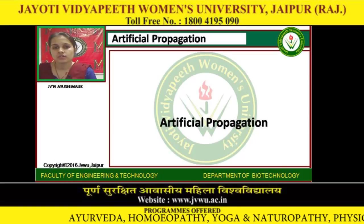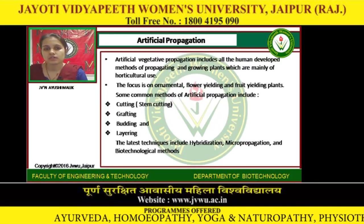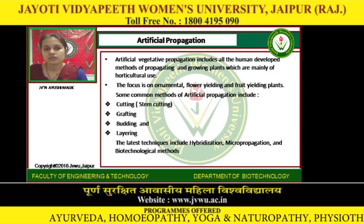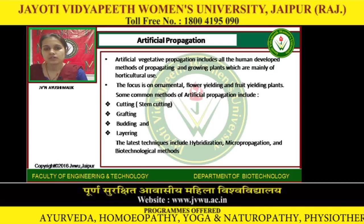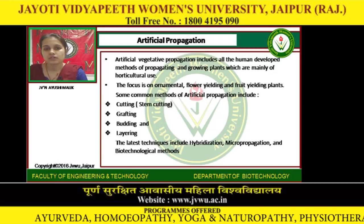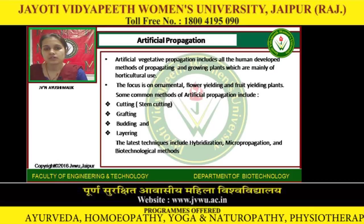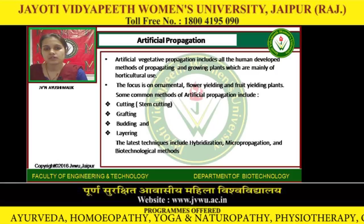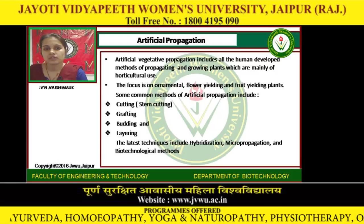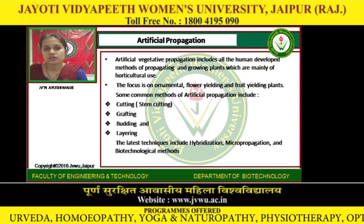Artificial Vegetative Propagation includes all the human-developed methods of propagating and growing plants, which are mainly of horticultural use. The focus is on ornamental, flower-yielding, and fruit-yielding plants.